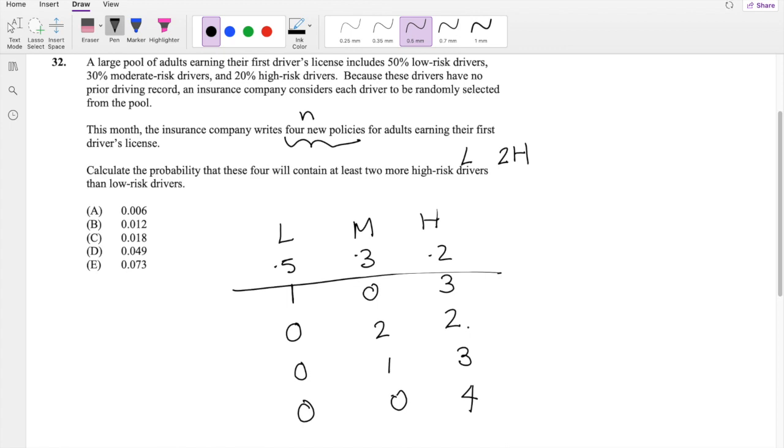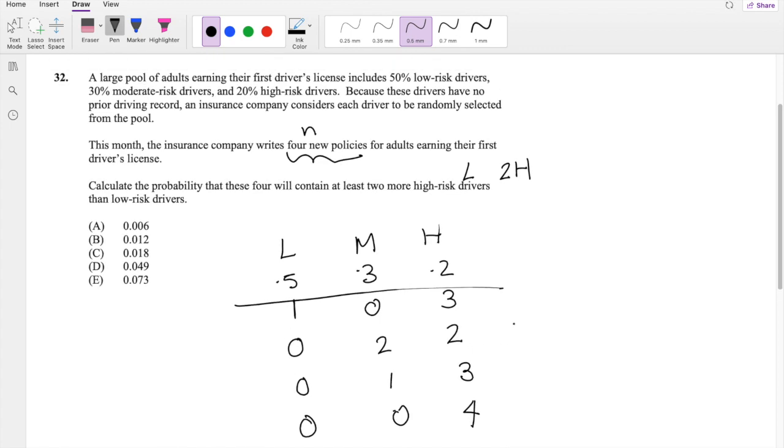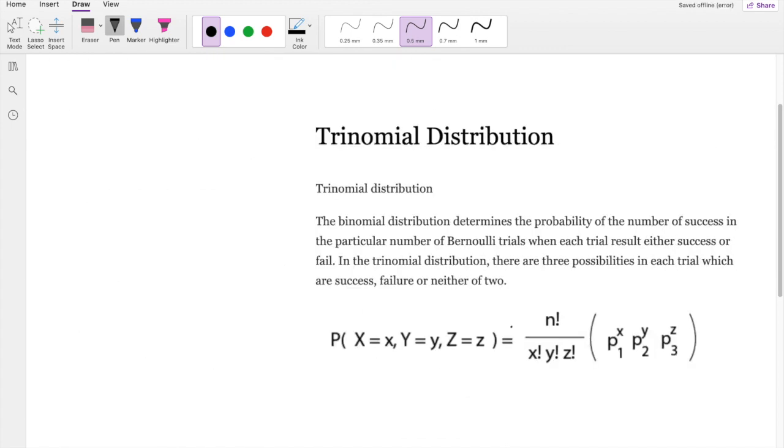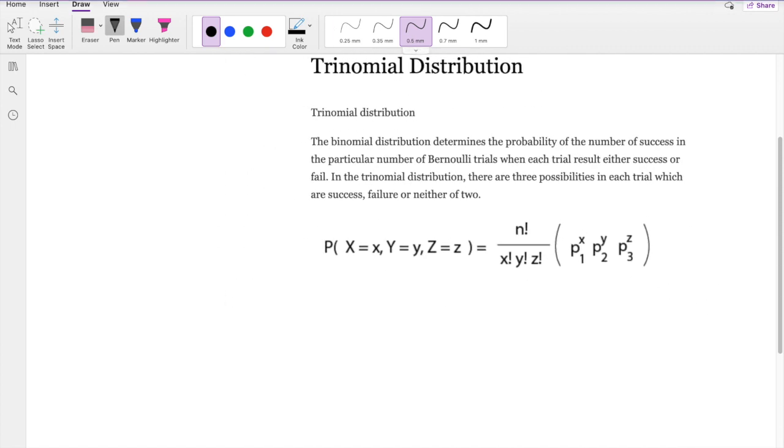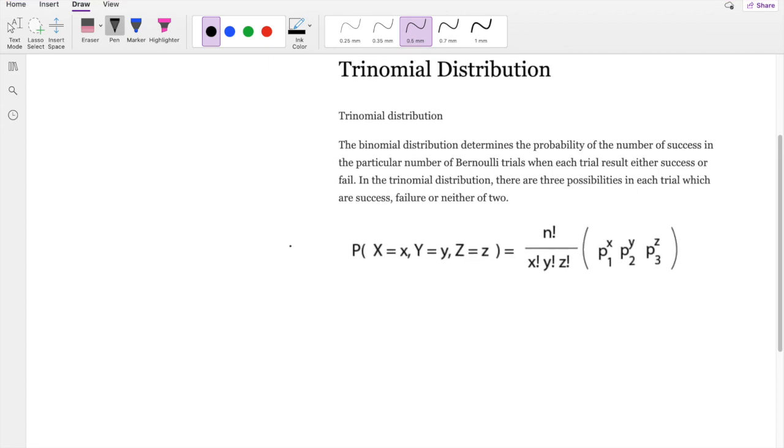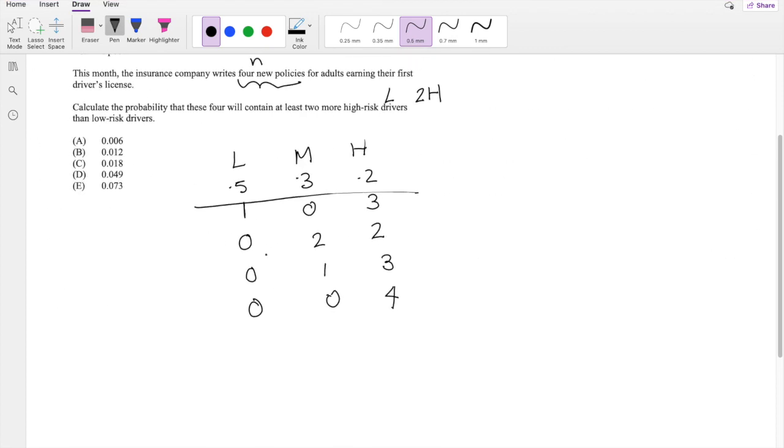And this is actually a trinomial distribution. But if you didn't know, that's okay too. So this is what it looks like. Basically, we can assign x, y, and z to be low risk, medium risk, and high risk.